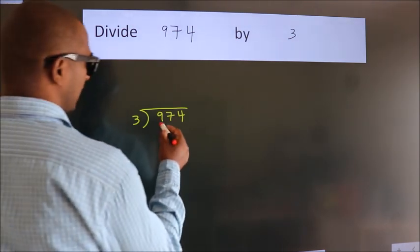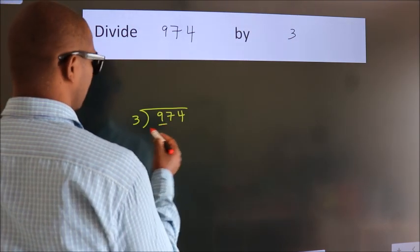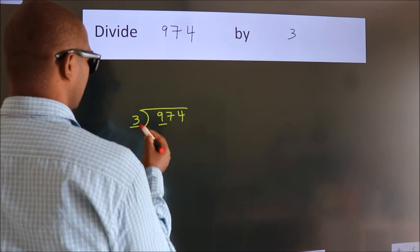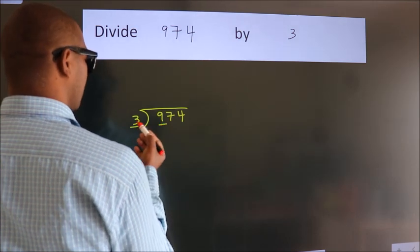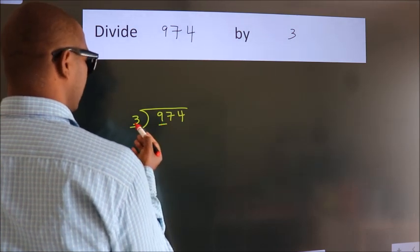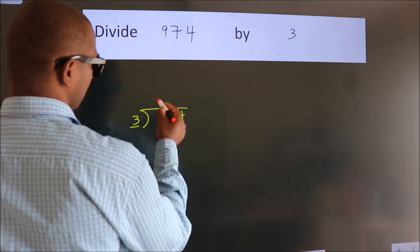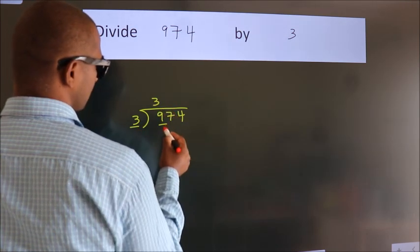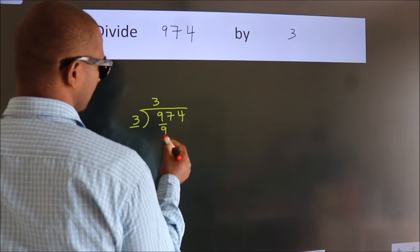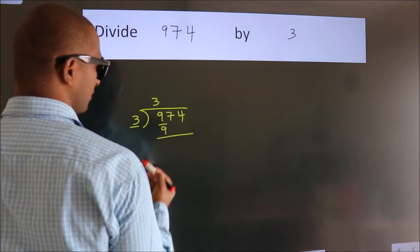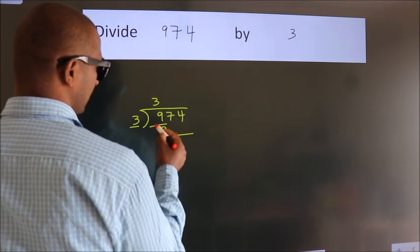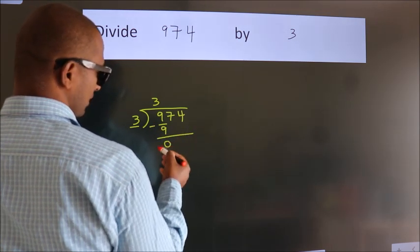Here we have 9, and here 3. When do we get 9 in the 3 times table? 3 times 3 is 9. Now we should subtract. We get 0.